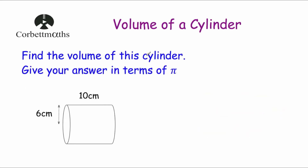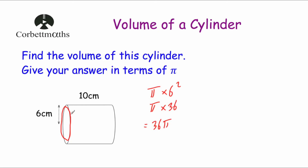Our last question is a non-calculator question, and we've been asked to give our answer in terms of pi. We've got a cylinder on its side with a radius of 6 centimetres and a length of 10 centimetres. Finding the area of the circle: pi multiplied by 6 squared. 6 squared is 36, so that gives us 36 pi centimetres squared. Then multiplying by the length of 10 gives 360 pi centimetres cubed as the volume of the cylinder.